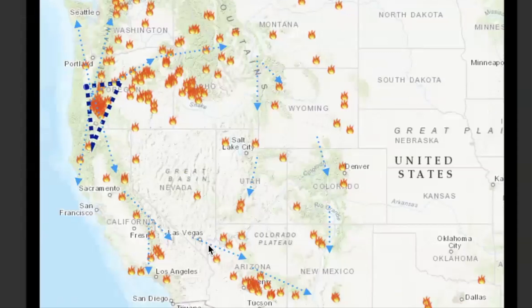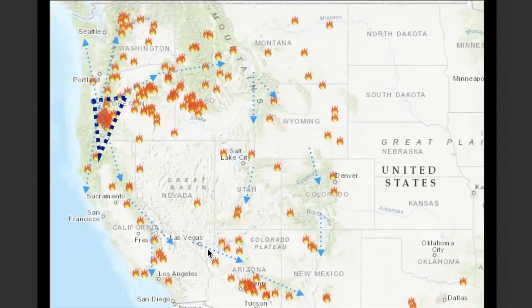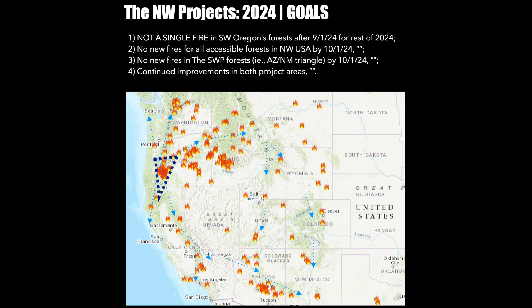so that it prevents fire, eliminates drought, and eliminates future fire. The goals for the Northwest Project: not a single fire in Southwest Oregon after the 1st of September for the rest of this year. Not a single fire in any of the Northwest United States forests by the end of September, in about six weeks. And then that will be the end of the project. And then no new fires in the Southwest Projects after the 1st of October.